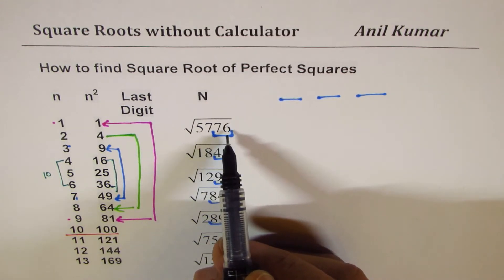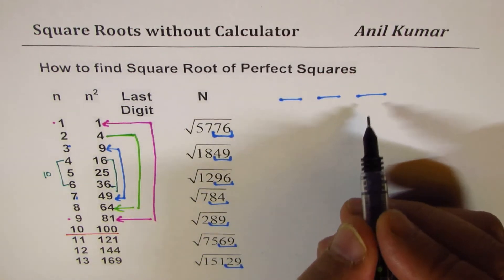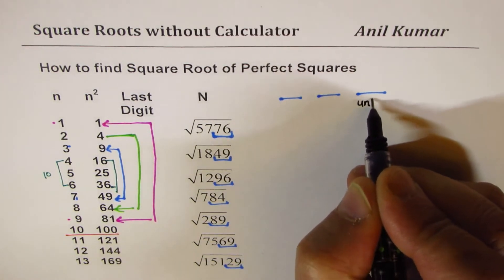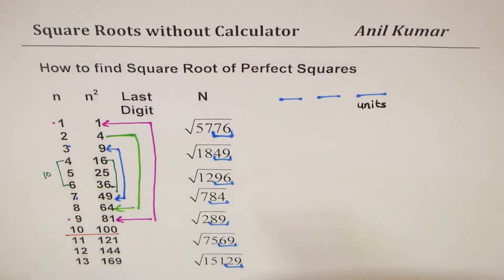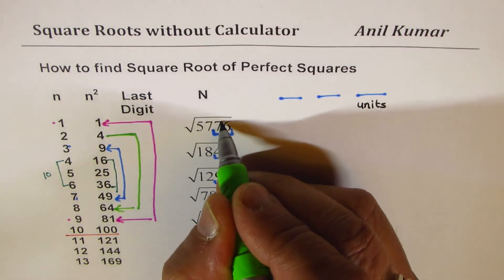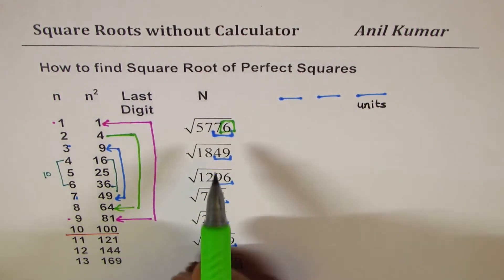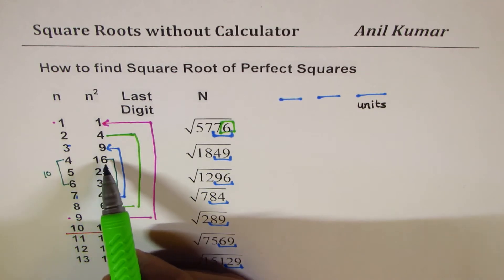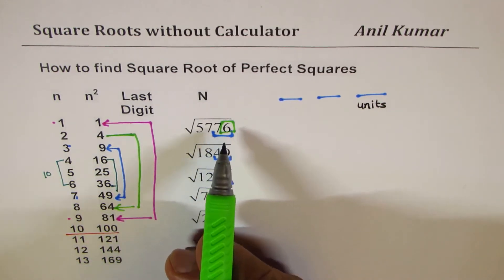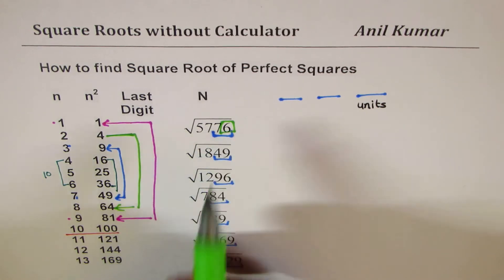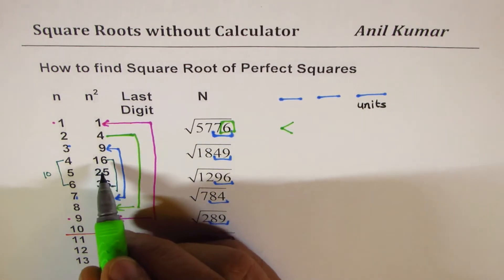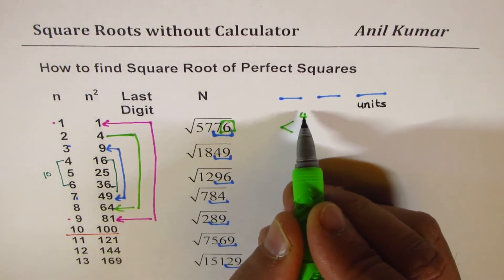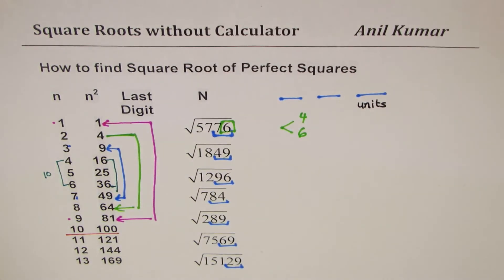The last two digits — specifically the last digit — decide the units place of the answer. For example, the last digit here is 6. We see 6²=36 and 4²=16, so there are two possible values for the units place: 4 and 6. We now have two options for the ones place and must figure out the tens place.